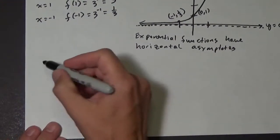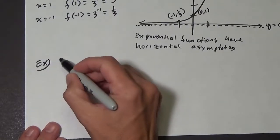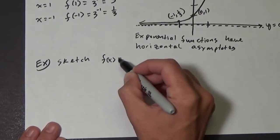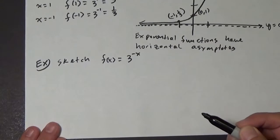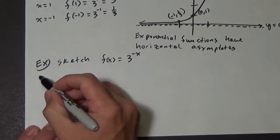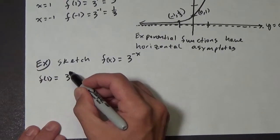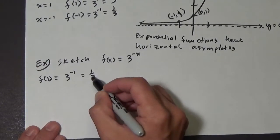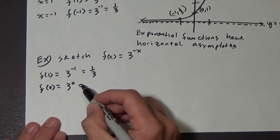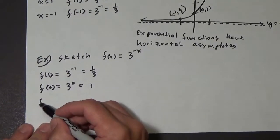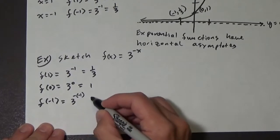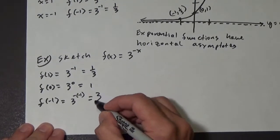Alright, let's try another one. Let's sketch f of x equals 3 to the negative x. So remember the three points: f of 1 equals 3 to the negative 1, which is 1 third. f of 0 is 3 to the 0, which is just 1. And f of negative 1 is 3 to the negative negative 1, which becomes 3 to the 1, which is 3.